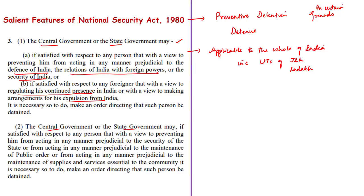If the central or state governments are satisfied that a person must be detained to prevent him from acting prejudicial to the security of the state, maintenance of public order, or maintenance of supplies and services essential to the community, then an order can be issued. A person can be detained under the National Security Act of 1980 based on these grounds, either by orders from the state government or the central government.